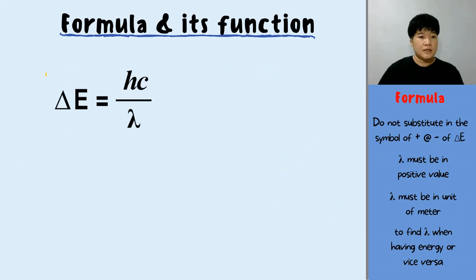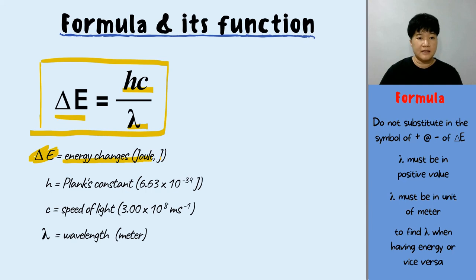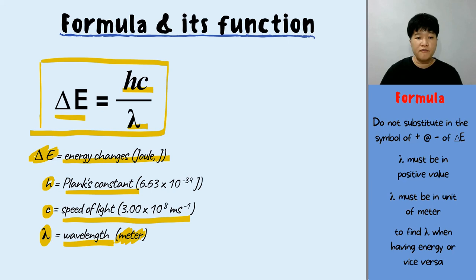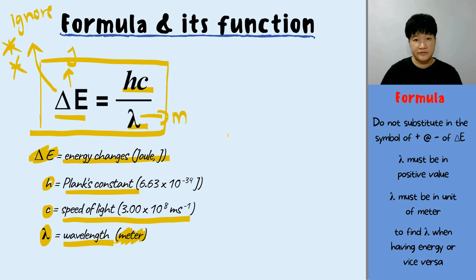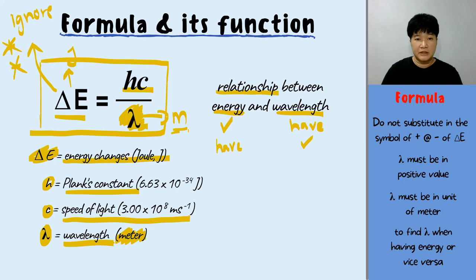Another formula — the last one in this video: delta E equals hc over lambda. Delta E is the energy change; h is the Planck constant; c is the speed of light; and lambda is the wavelength, which must be in meters. Energy must be in joules. In this formula, ignore the positive and negative sign of delta E. This formula shows the relationship between energy and wavelength.